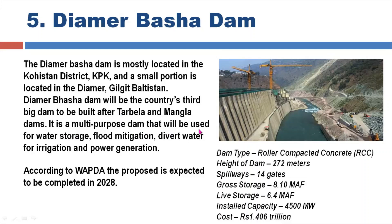Diamer Basha Dam is a multi-purpose dam that will be used for water storage, flood mitigation, diverting water for irrigation, and power generation. The proposed dam is expected to be completed in 2028.